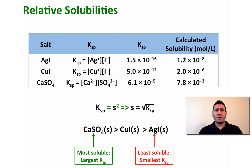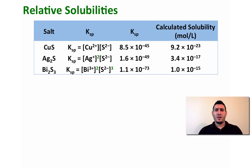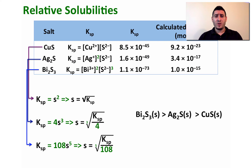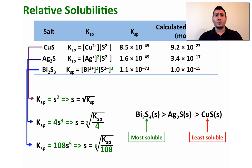Can we always use Ksp values to compare solubilities of ionic solids? No — when the solubility formula changes between compounds, we cannot compare directly. For copper sulfide, S = √Ksp; for silver sulfide, S = ∛(Ksp/4); and for bismuth sulfide, S = ⁵√(Ksp/108). In this case, bismuth sulfide — which has the lowest Ksp — is actually the most soluble, while copper sulfide is the least soluble, as confirmed by the calculated solubility values.